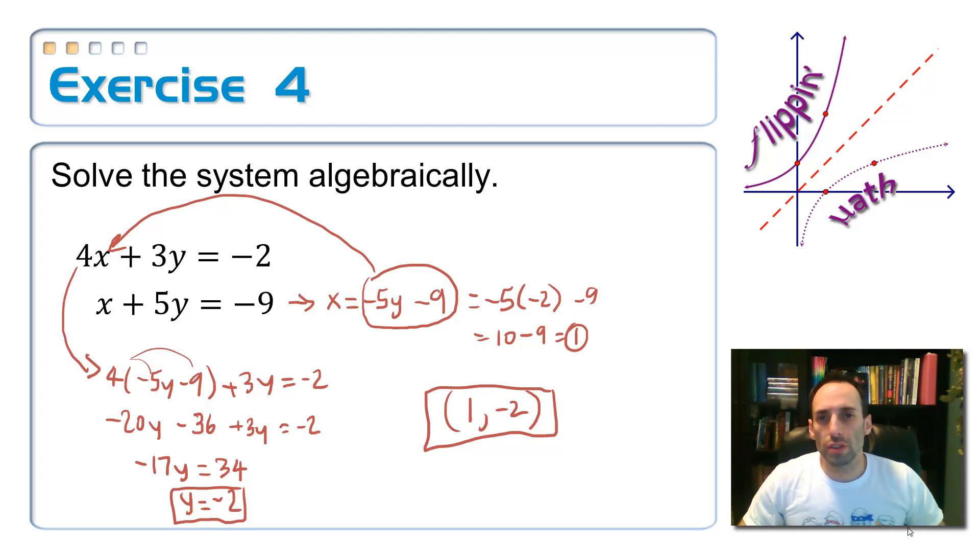So it was more convenient to solve the second equation for x, because x has a leading coefficient of 1. So subtract 5y over. Then I would take that expression, negative 5y minus 9, and stick it in for x in the top equation, the other one. Remember, if I stick it into the same equation, I get nowhere. It's kind of like a dog chasing its own tail.